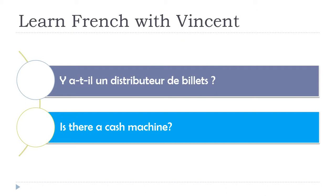First the pronoun 'y', then the verb 'a' (from avoir), then the subject 'il'. Between the verb and subject we add a 't' for euphony — to make it flow and sound nicer. Without the 't' it wouldn't sound right. So: 'y a-t-il un distributeur de billets?' This 'y a-t-il' structure is simply 'il y a' in its correct interrogative form.